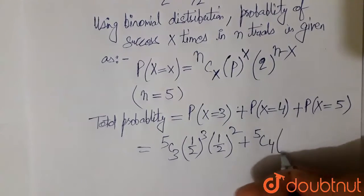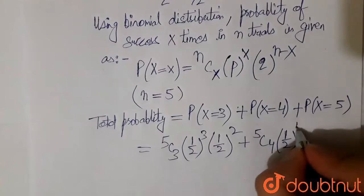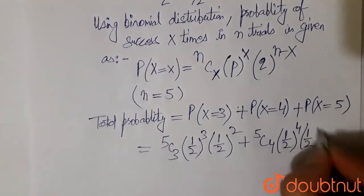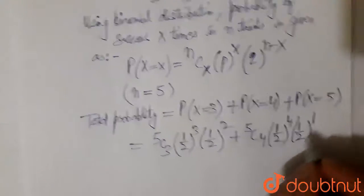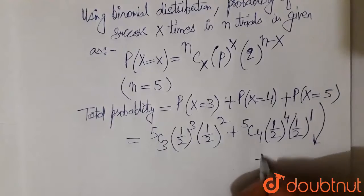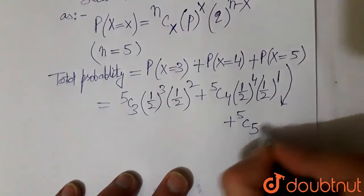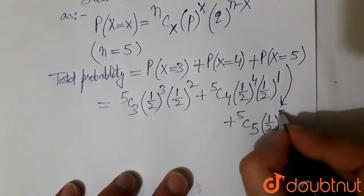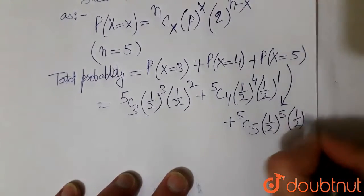For this case 5C4, 1 by 2 to the power 4, and 1 by 2 to the power 5 minus 4, that is 1. And for this case it becomes 5C5, 1 by 2 to the power 5, and 1 by 2 to the power 0.